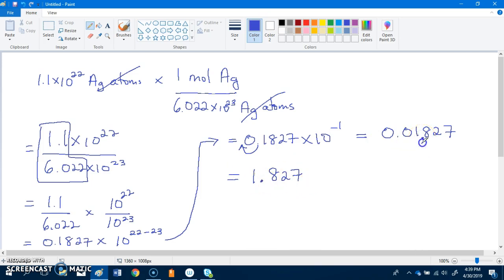In order to make our answer equal this, we have to move the decimal one, two places to the left to make it equal the actual answer. That's why it becomes 1.827 times 10 to the negative 2.